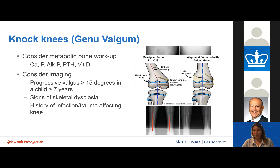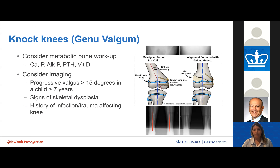For both genu varum and valgum, our primary method of fixation is guided growth — utilizing the growth potential of young children by applying a tether to whichever side of the physis is outgrowing the other. In genu valgum, with the medial side outgrowing the lateral, we apply a tension band plate and screws to temporarily pause growth on that side and allow the opposite side to catch up, straightening the limb over time.